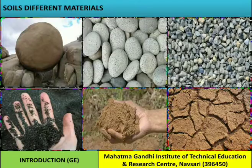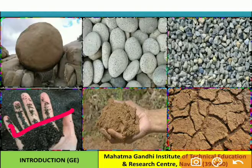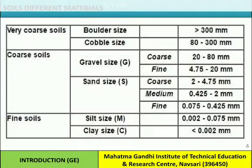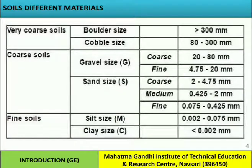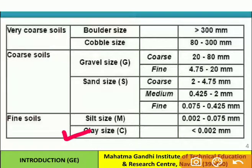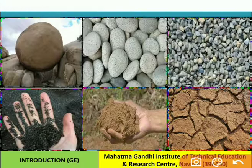The third category is fine soil, subdivided into silt size and clay size. If the size of the soil is less than 0.002 mm, it is known as clay size. If it is in the range of 0.002 to 0.075 mm, it is known as silt size. In the figure, I have categorized all six soil types discussed in the table.